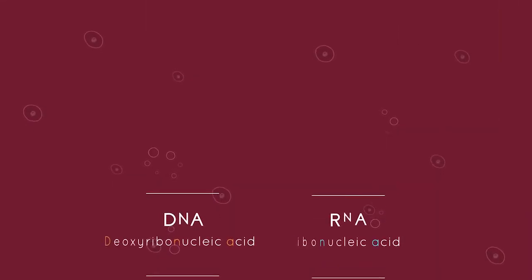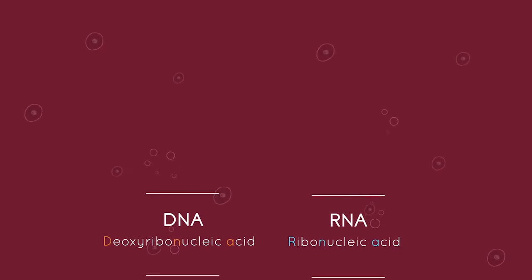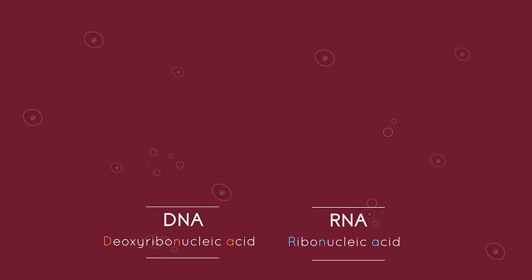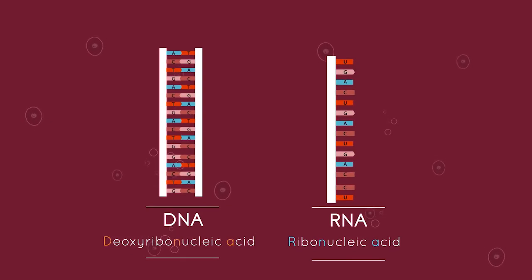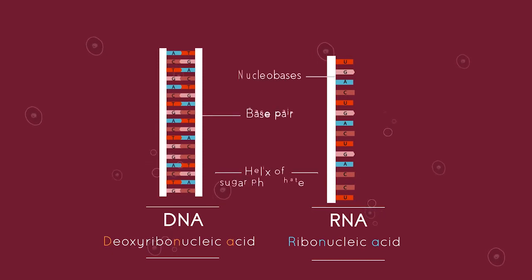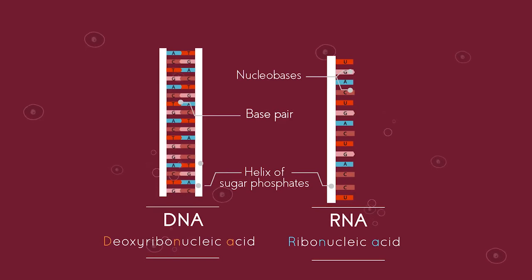Now let's look at how they differ. DNA stands for deoxyribonucleic acid, whereas RNA stands for ribonucleic acid. DNA is double-stranded while RNA is single-stranded. Like DNA, RNA is made up of a long chain of nucleotides. Each nucleotide consists of a ribose sugar, a phosphate group, and a nucleotide base.